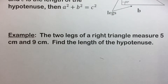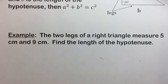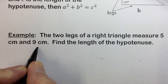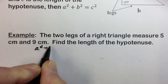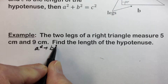The two legs of a right triangle measure 5 centimeters and 9 centimeters — find the length of the hypotenuse. We will substitute those lengths of the legs into the Pythagorean theorem: A squared plus B squared equals C squared.